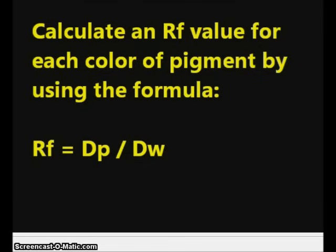The final part of our analysis will be to calculate an RF value. This is going to be a different calculated number for each different color pigment. For a pigment which travels exactly the same distance traveled by water, which is the solvent or the mobile phase in this experiment, the RF value would calculate to be 1.